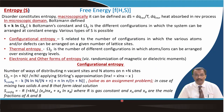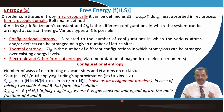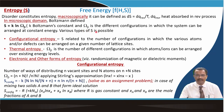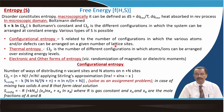Entropy is disorder defined microscopically. The change in entropy is the reversible heat absorbed in a microscopic domain. Boltzmann defined entropy as S = k ln Ω, where k is the Boltzmann constant and Ω (omega) is the number of different configurations in which the system can be arranged at constant energy. Various types of entropy are possible; configurational entropy relates the number of configurations in which atoms or defects can be arranged on a given number of lattice sites.